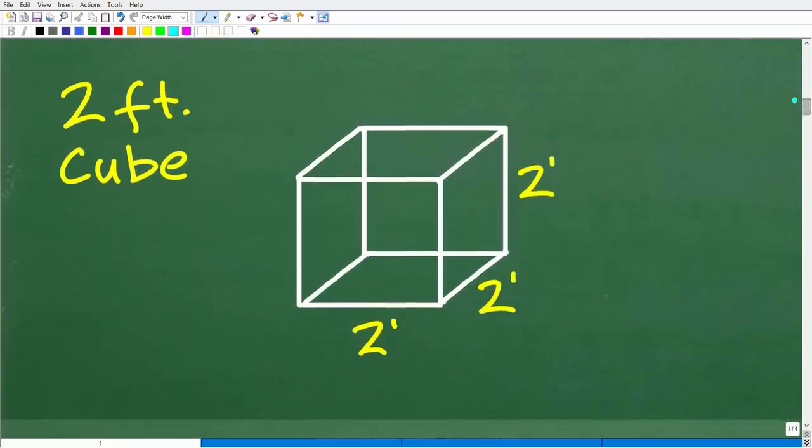All right, so here is a sketch of a two-foot cube. A cube is basically like a die. Some dice you throw, it's a square, right? So it's a solid square, and each side is two feet.